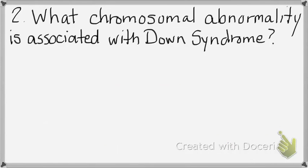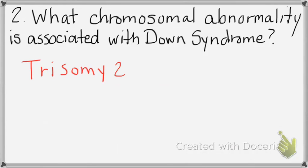What chromosomal abnormalities are associated with Down syndrome? Chromosome 21 — how many 21s? Three. So this is Trisomy 21, which means there are three 21st chromosomes. Make sure that you can recognize that on a karyotype.